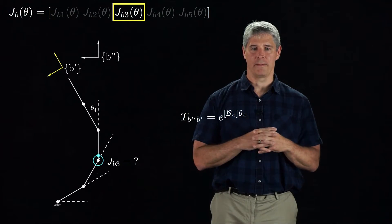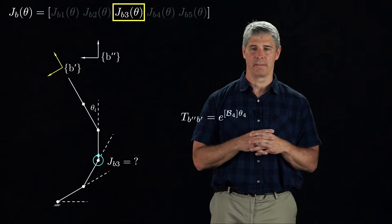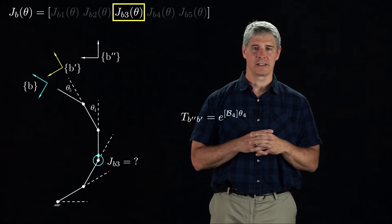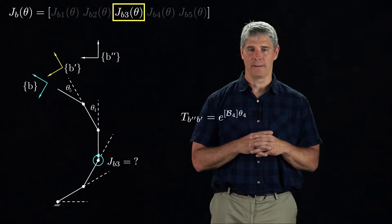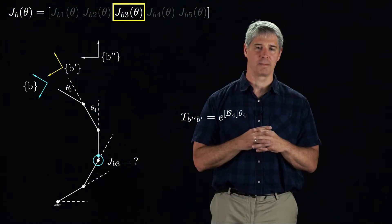We define the B'' frame because the screw axis for joint 3 is just B3 in this frame. Finally, we rotate joint 5 by theta 5, giving us the final end-effector frame B, obtained by rotating the frame B'' about the joint 5 screw axis by theta 5.